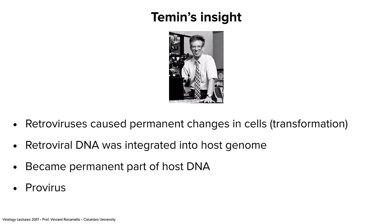Temin, and many others, found that retroviruses cause permanent changes in cells. Instead of dying after a certain point, they transformed cells so they lived forever. He figured out that this must be a heritable change in the genome — there must be something changed about the DNA of the cell's genome. It was eventually figured out that retroviral DNA was integrated into the genome, became a permanent part of the host, in order to cause this permanent transformation. This was a revolutionary idea because it's an RNA virus, yet that is what was happening.